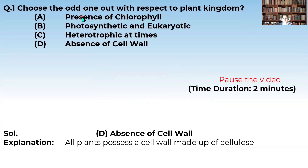Presence of chlorophyll — plants contain chlorophyll, so that is correct. Photosynthetic and eukaryotic — yes, also correct. Heterotrophic at times — also correct, since some plants like Venus flytrap are insectivorous. Absence of cell wall — this is the odd one out, because the characteristic of the plant cell is the presence of the cell wall. So the correct option is absence of cell wall.